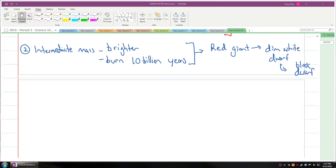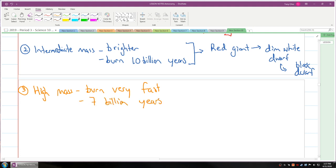High mass stars are the next category we're going to talk about. High mass are larger than our sun. And these burn very fast. They last around 7 billion years. Depending on their size, they could die in two different ways.